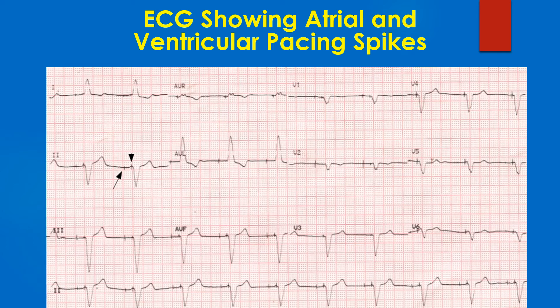Regular ventricular capture is seen after each ventricular spike. The paced QRS complexes are wide and have a left bundle branch block pattern with left axis deviation.